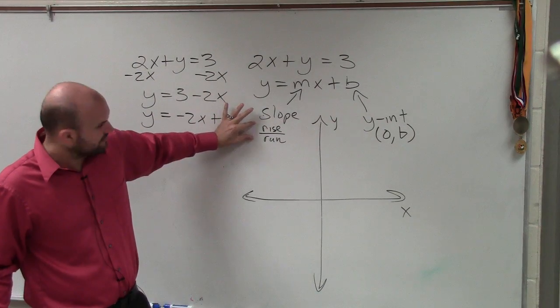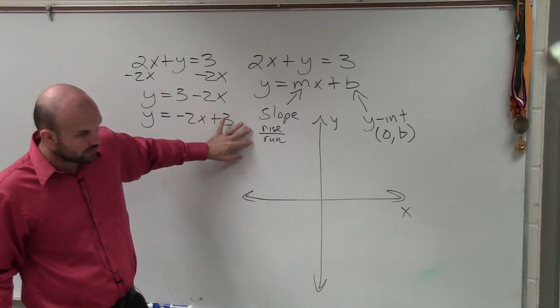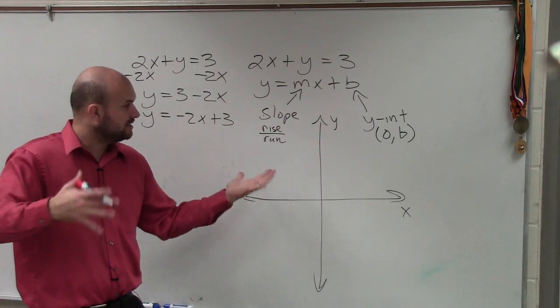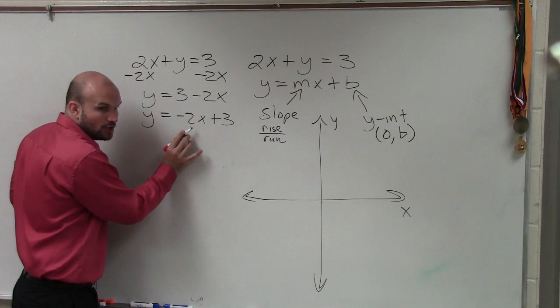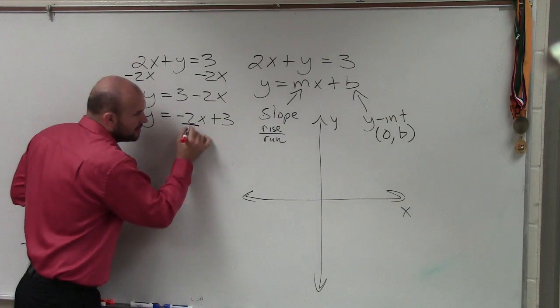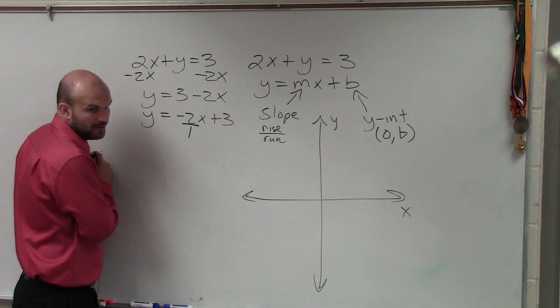Now, notice how I talked about slope as a fraction. Right? Rise over run. It's a ratio. You're comparing the change in y-coordinates over the change of x-coordinates. So every single time you have slope that's not already a fraction, make it a fraction by putting it over 1.